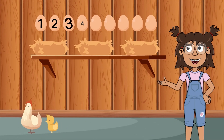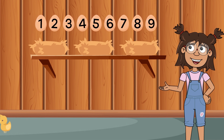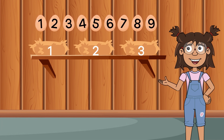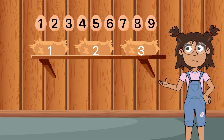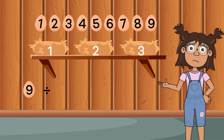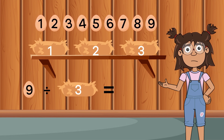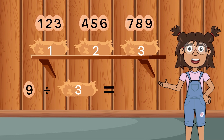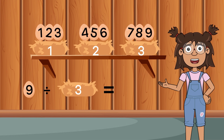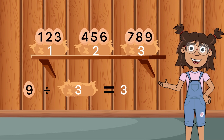There are nine eggs and three nests. Can each nest hold an equal number of eggs? Hmm. If we have nine eggs divided by three, the answer is yes. Nine divided by three equals three.